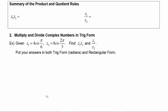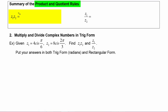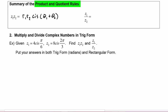In an earlier lesson we learned the product and quotient rules, so let's remind ourselves. Z1 times Z2 is equal to R1 · R2 · cis(θ1 + θ2), and Z1 over Z2 is equal to R1 over R2 · cis(θ1 − θ2).